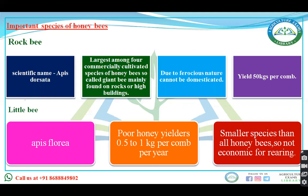First is rock bee, that is Apis dorsata. This is the largest among the commercially cultivated species. Out of the six indigenous species, only four are commercially cultivated, and rock bee is the largest among those commercially cultivated species.